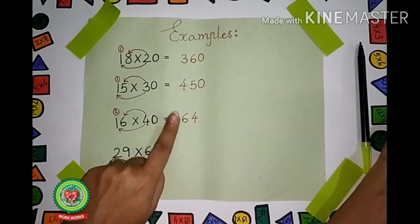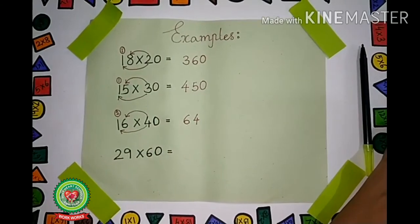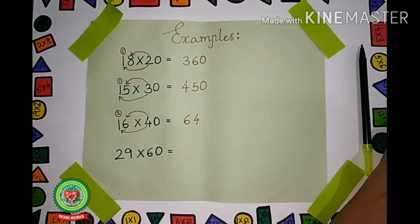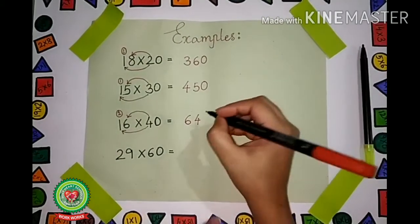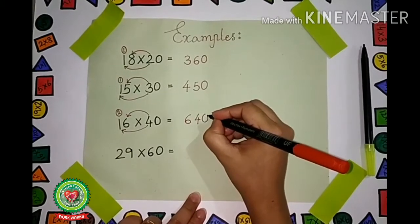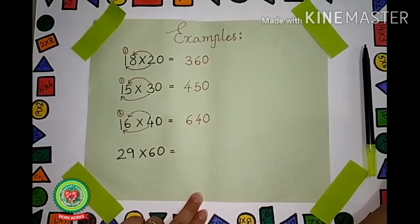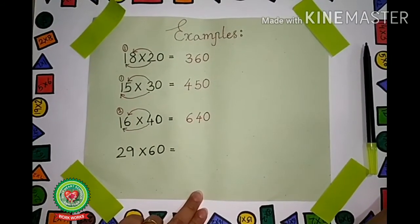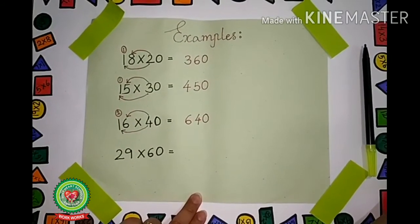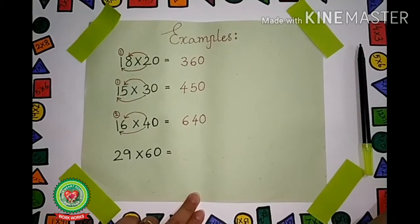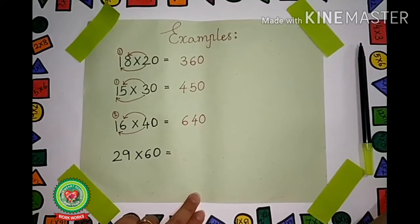Now remove your finger. What can you see? There is a 0. So we will write the 0. That means our answer is 640. Now look at the last example.